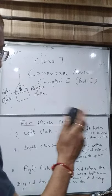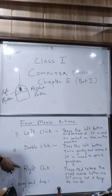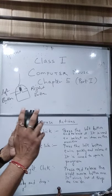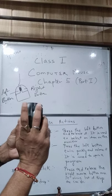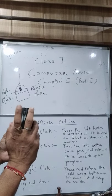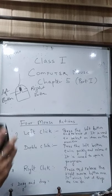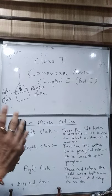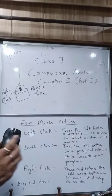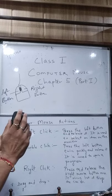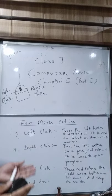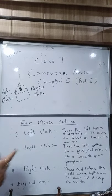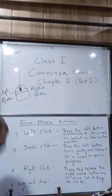The third action is right click. Right click means to press and release the right mouse button once. What's the use of right click? When you press the right button, it shows a list of things you can do, like cut, copy, paste, and so on. So if you want to see that list, you just press the right button.